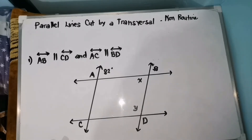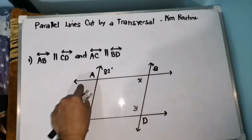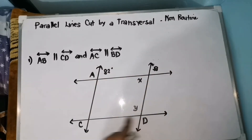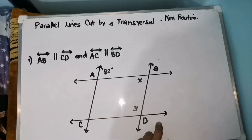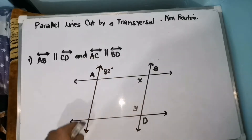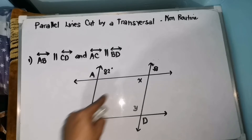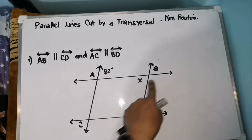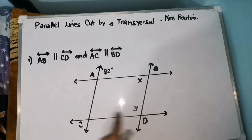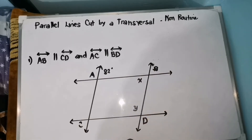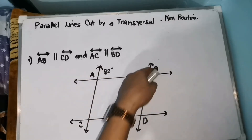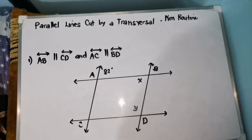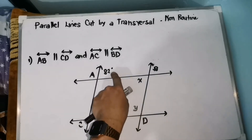For example, our given is line AB. Line AB is parallel with line CD, and line AC is parallel with line BD. So, ito yung ating parallel lines, and itong dalawa yung transversal lines. Kapag naman yung AC at BD ang parallel lines, ang ating transversal line ay pwedeng AB or CD. Ang given lang natin ay 82 degrees, and we need to find the value of X and Y.